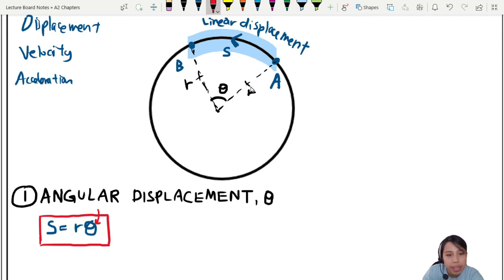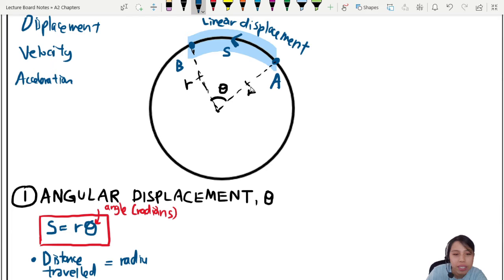This is how angular displacement relates to our arc length, which is a linear displacement. By the way, this theta is an angle in the unit of radians. Distance traveled equals to the radius times angular displacement. Let's write that out. Angular displacement.